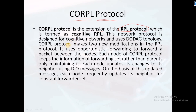The C in CORPL stands for Cognitive, meaning cognitive RPL. Cognitive involves intellectual activities such as reasoning, numbering, and thinking. This network protocol is designed for cognitive networks and also uses DODAG topology — Destination Oriented Directed Acyclic Graph. CORPL makes two new modifications to the RPL protocol.